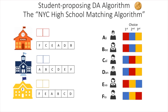Let's look at an example. We have three schools: the red school, the blue school, and the yellow school. Each school has two available spots, and each school has prioritized students based on their own criteria. We have six students: Ali, B, Cal, Dan, Eva, and Flo. The student with the highest priority in the red school is Flo. For each student, we have a choice list with first, second, and third choices.